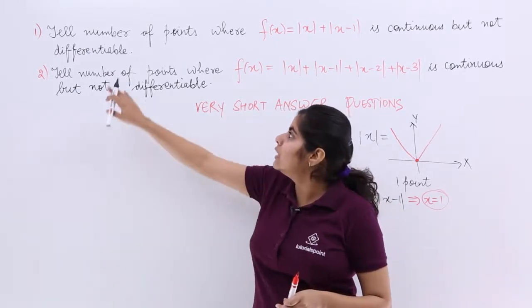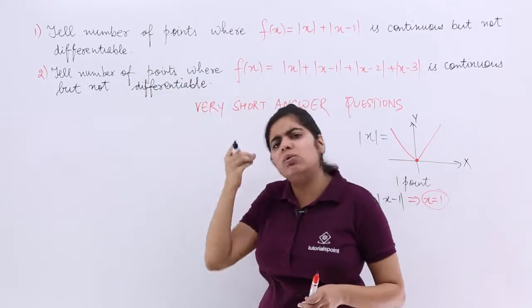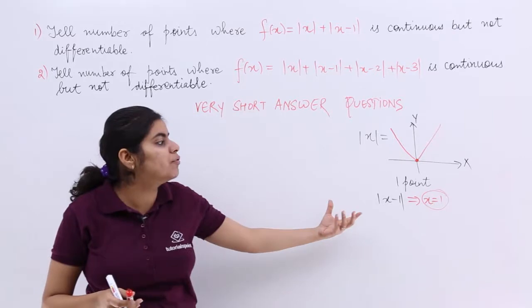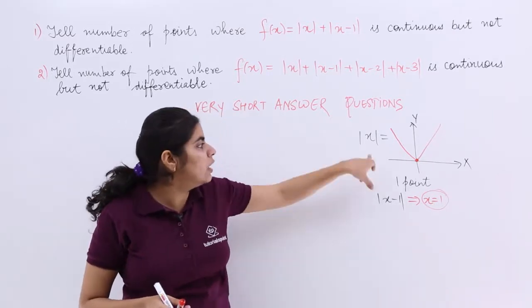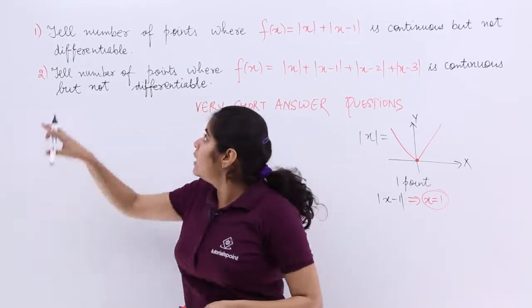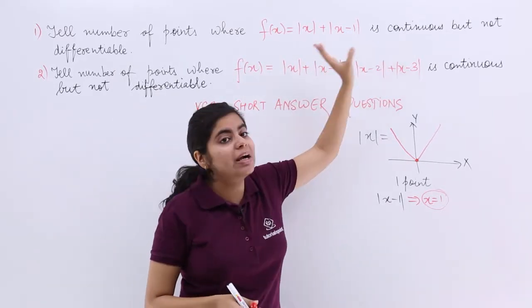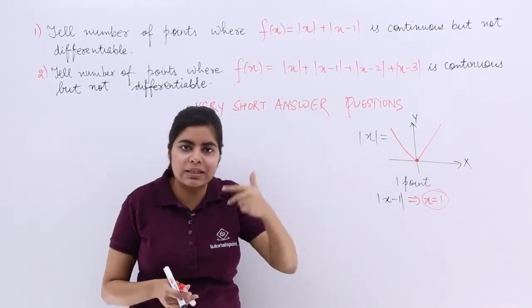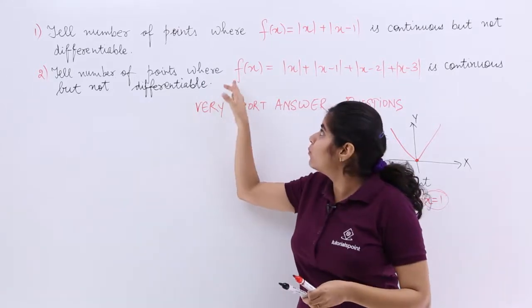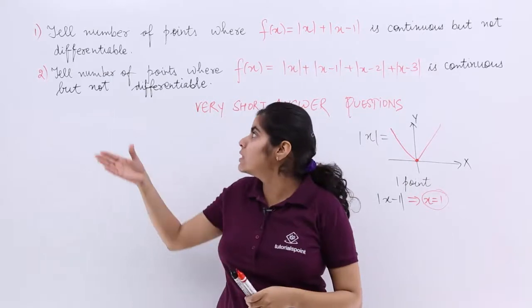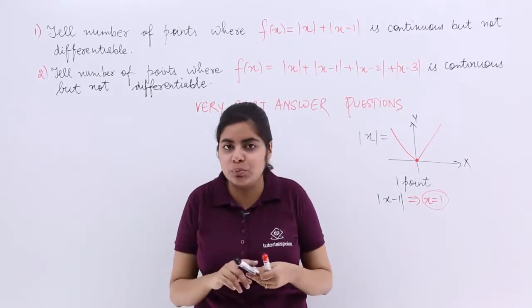Similarly, now let's move to the question. Tell number of points, that means only number of points you have to say. You even don't have to say that which value of x will be there, one point here, one point here like that. Tell number of points where this given function is continuous but not differentiable. Similarly, the second question is what? Tell number of points where the function f(x), a very long function, is continuous but not differentiable. So that is what you have to do.